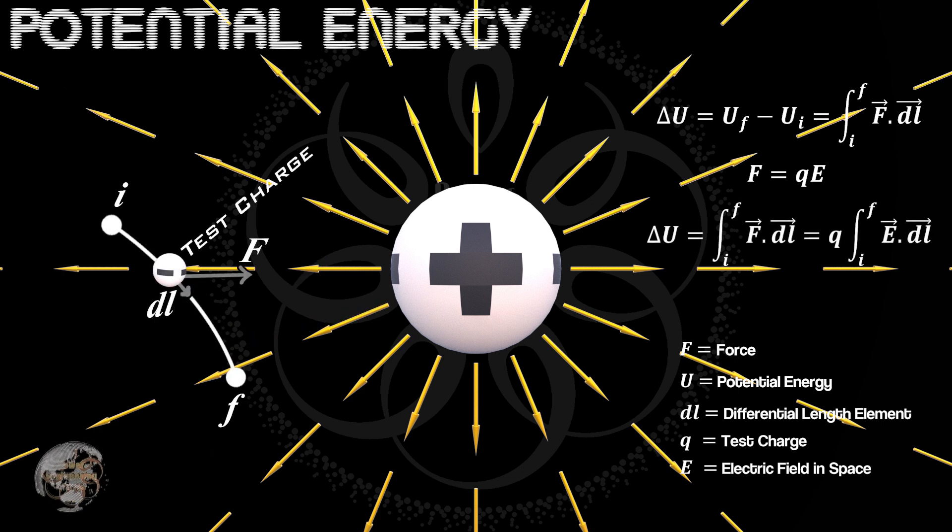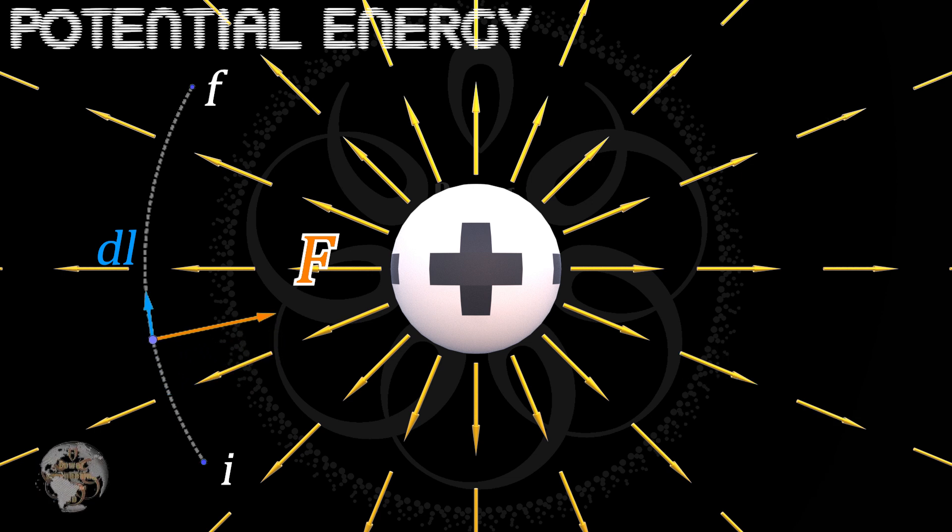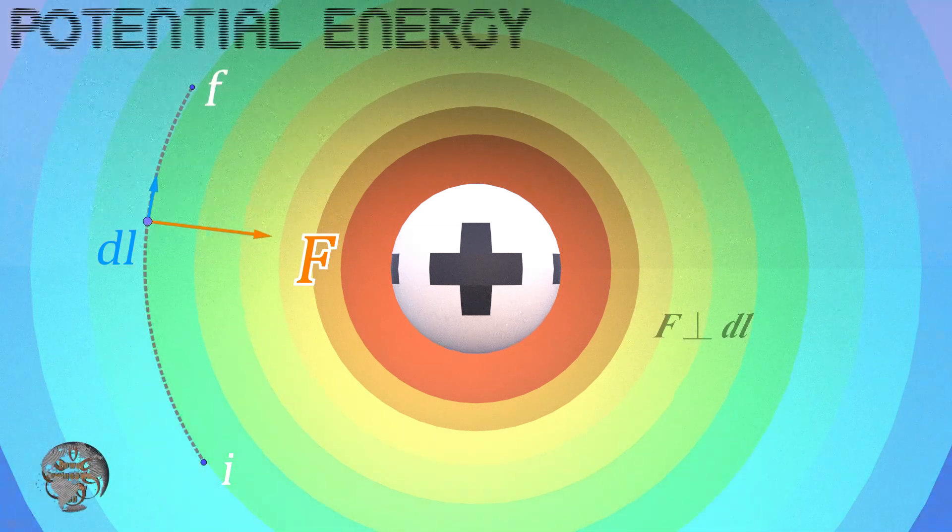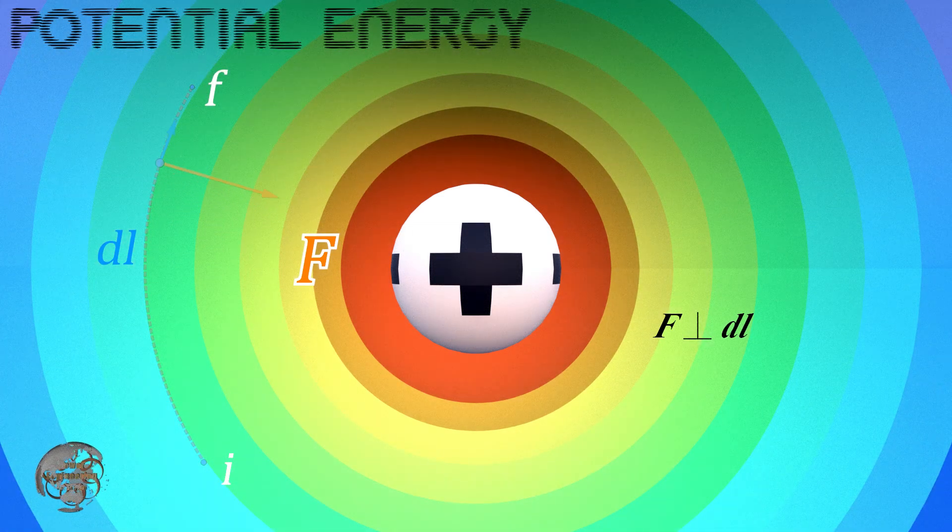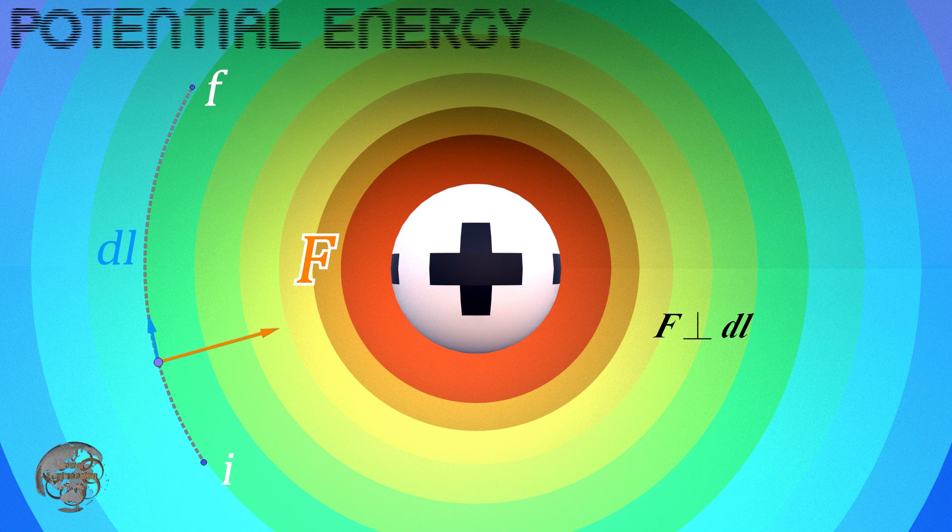The dot product of the electric field and the differential length element, DL, means that if the angle between the field direction and the direction of motion is 90 degrees, the change in potential energy will be zero. This means that there are surfaces in space along which an electric charge can move without any change in its potential energy. These are called equipotential surfaces.